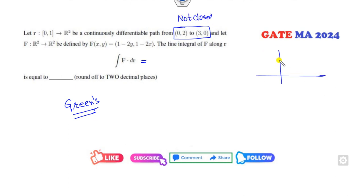This is my (0,2) here and this is (3,0), so you have to go from this to this. It is not closed because origin is not given as a point, so how can you solve that?